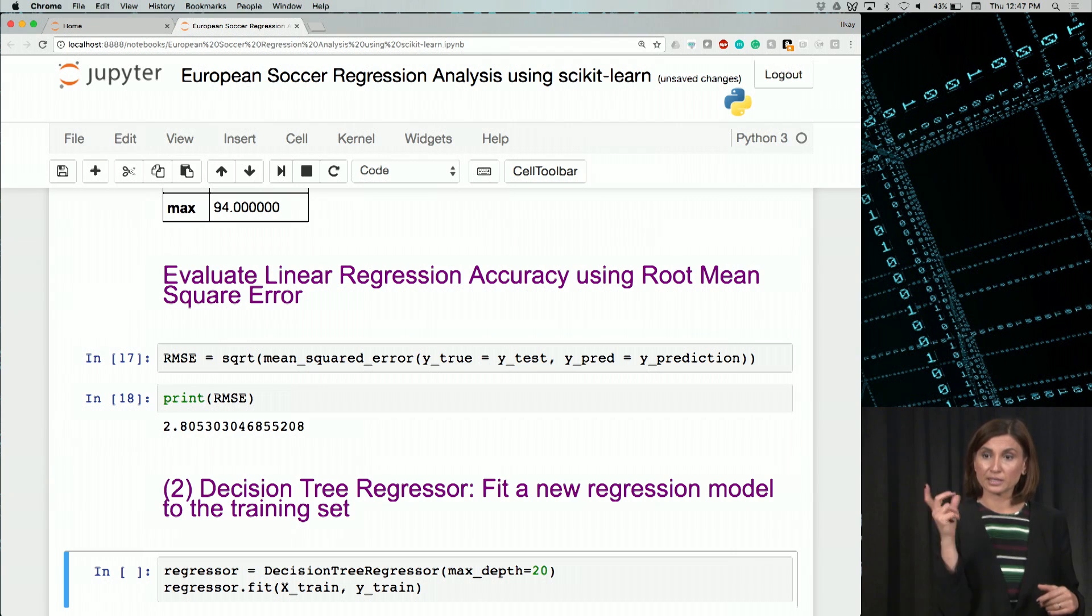And we are using that regressor to fit the training input and output data sets. So x_train and y_train. We change the method, but the fit line stays the same. The regressor will be just of another class and another method.